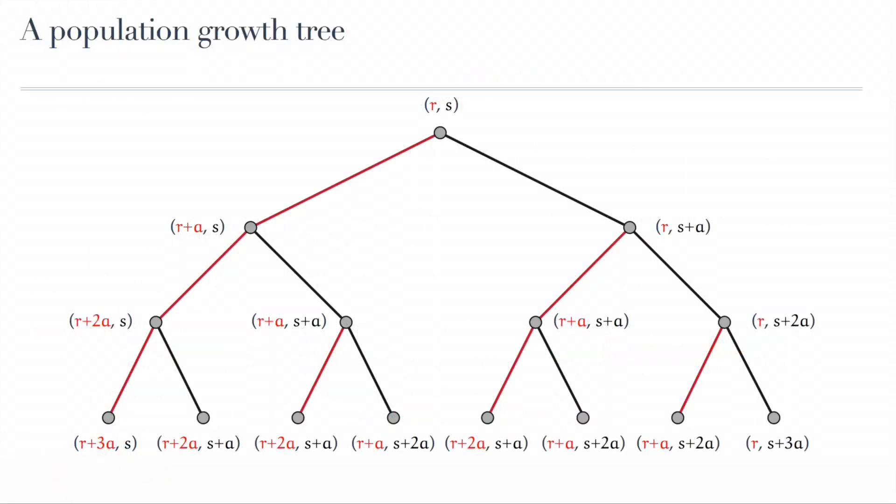Imagine that we have, as a root of a tree, a population of two flavors, R and S - R red, S black.